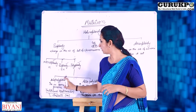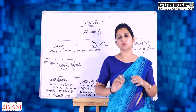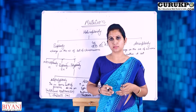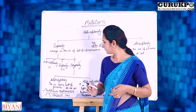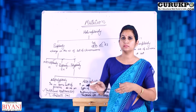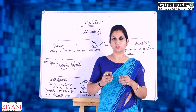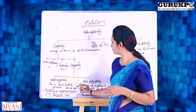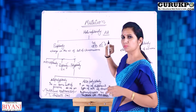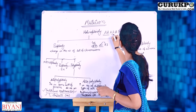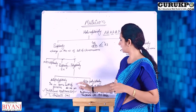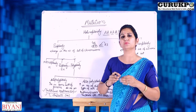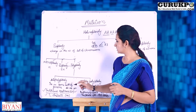Polyploidy is of two types: autopolyploidy and allopolyploidy. In autopolyploidy, the same type of genomes — the same set of chromosomes — increase within a genome. A classical example is Triticum aestivum and Triticum durum. In Triticum aestivum, the sets of similar genomes increase to produce a hexaploid condition, where the same genome is repeated six times. In Triticum durum, we have a tetraploid condition where the same type of chromosome set is repeated four times.